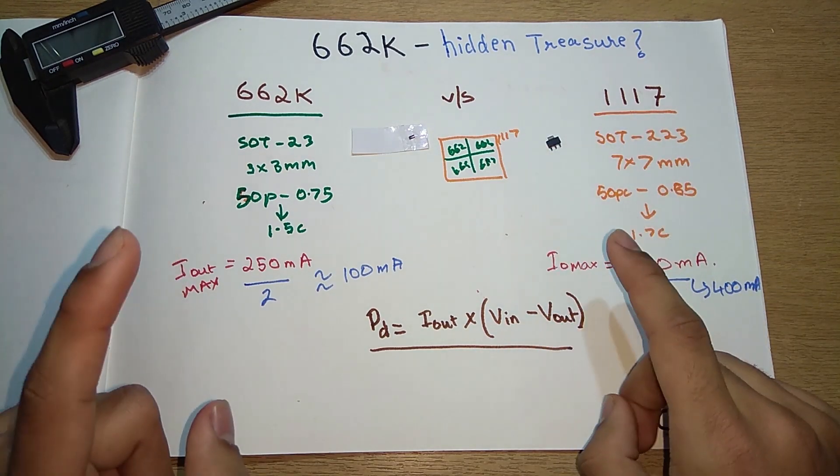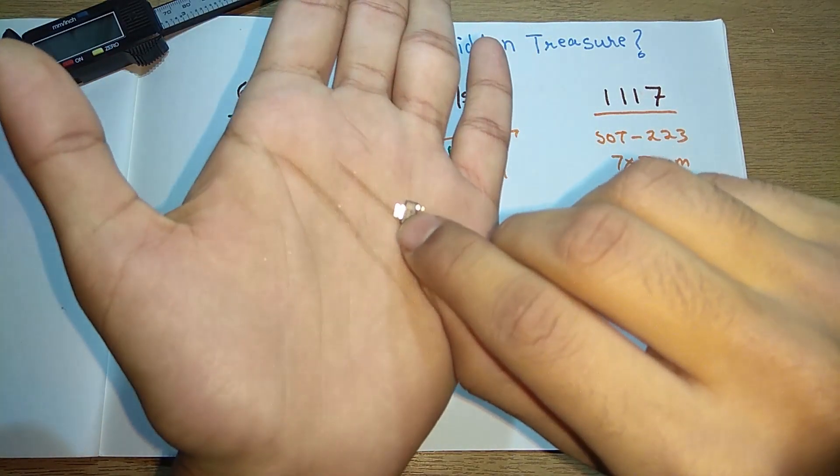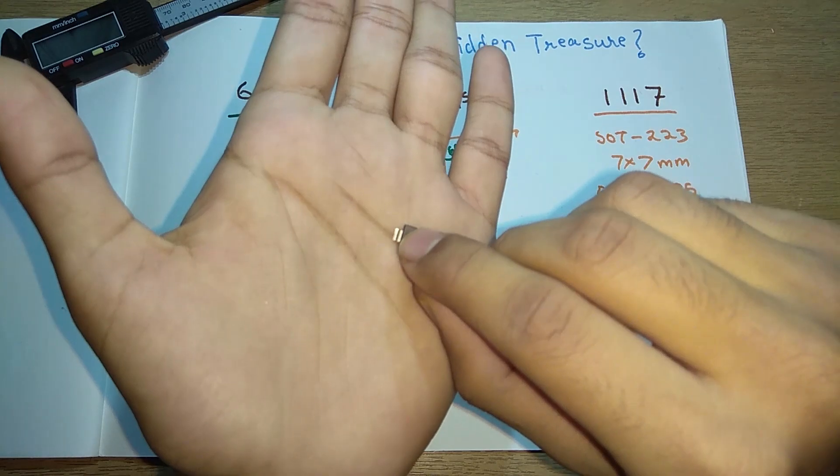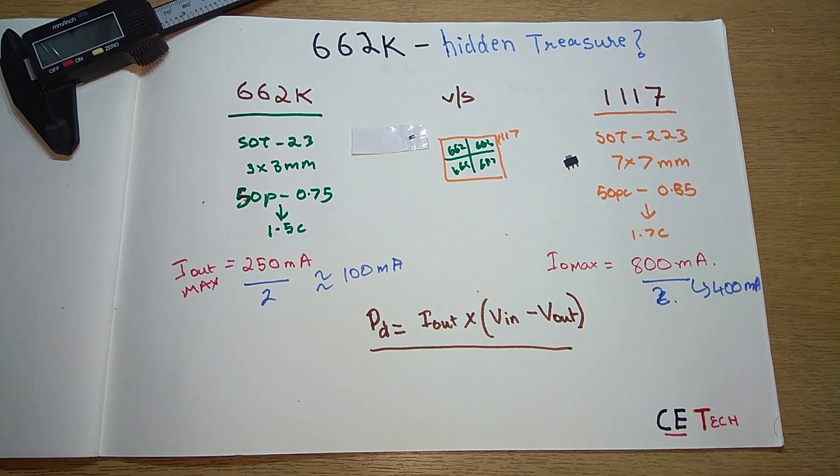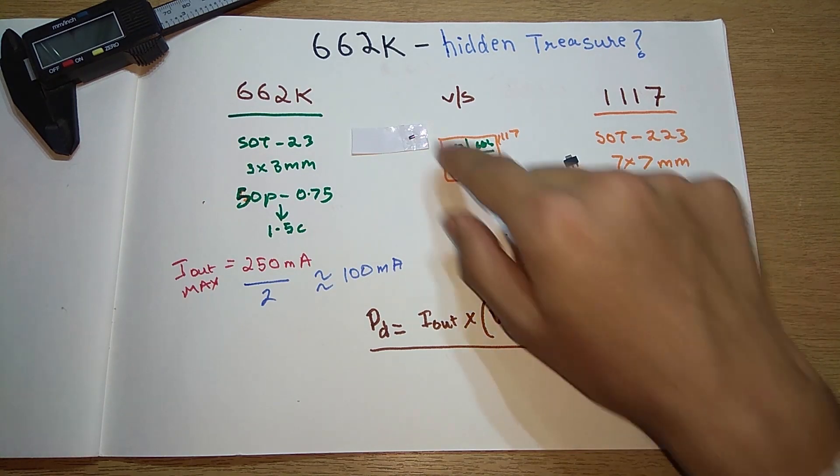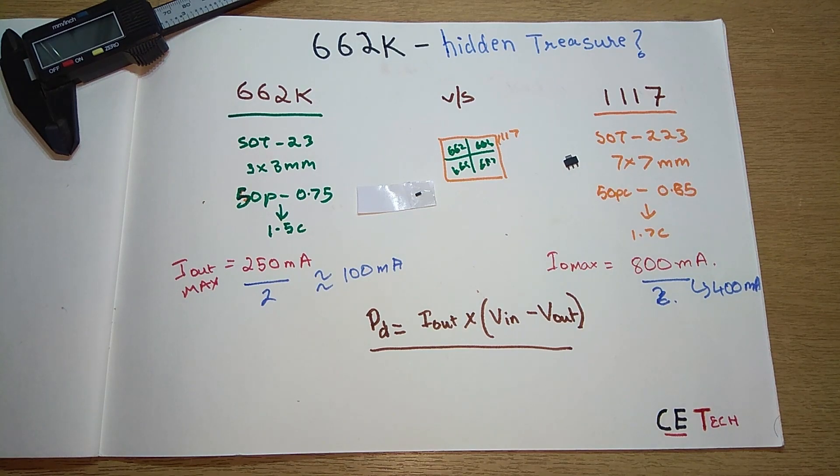Again talking about heat, the 1117 has a small heat sink at its top—it's called a tab in its datasheet—which can be soldered to a heat sink to provide better heat dynamics, whereas the 662K doesn't have anything like that. It only has three terminals.